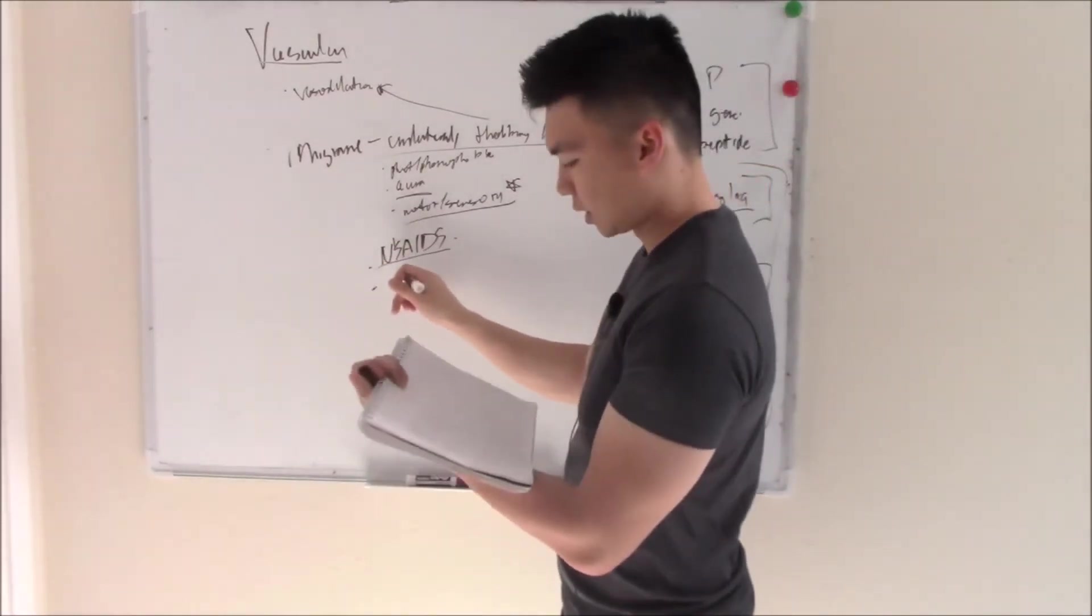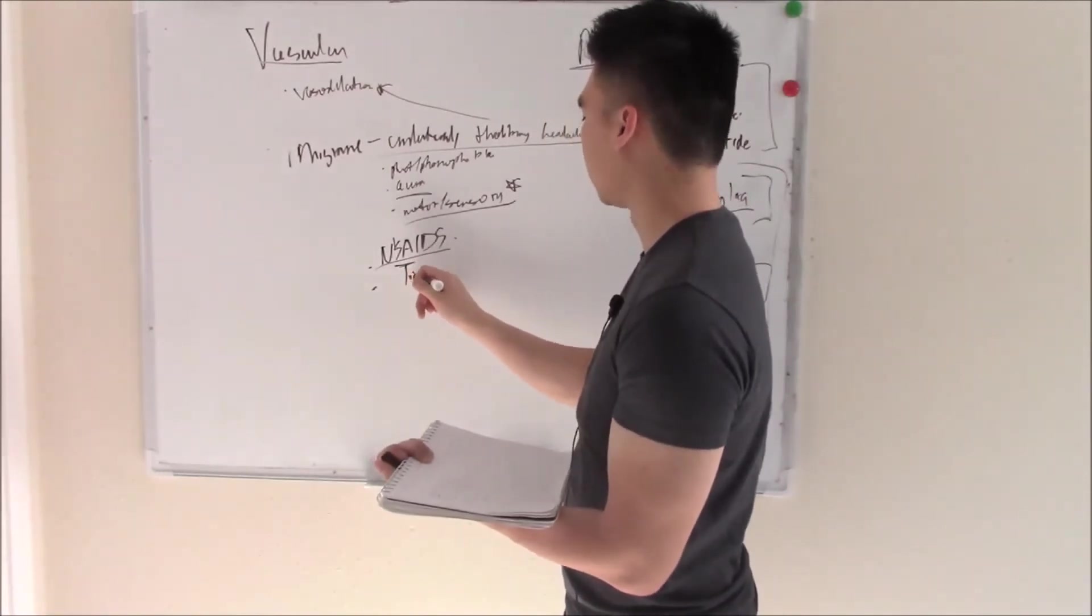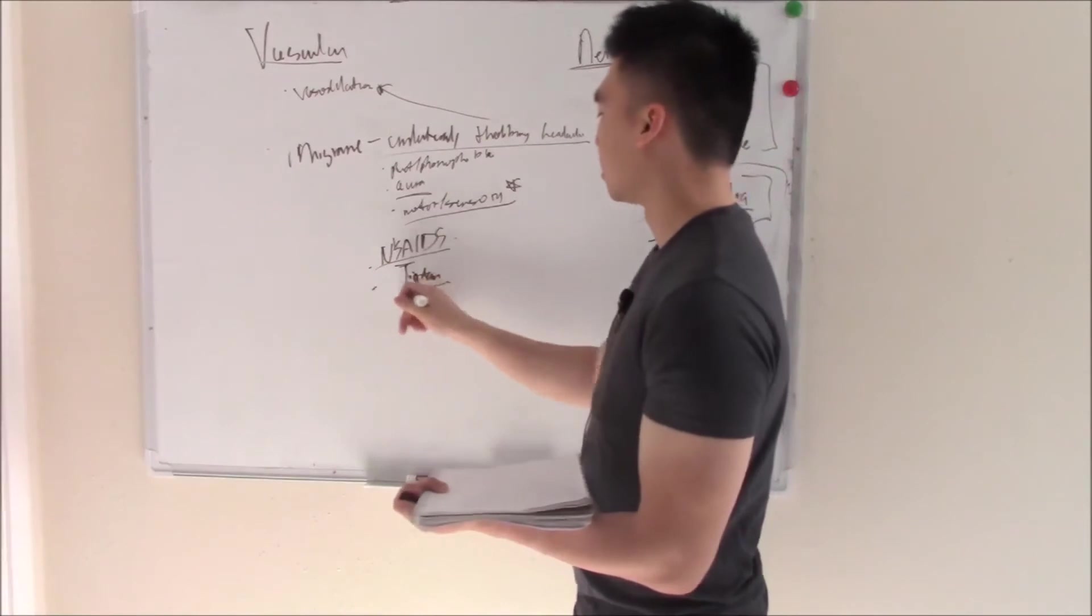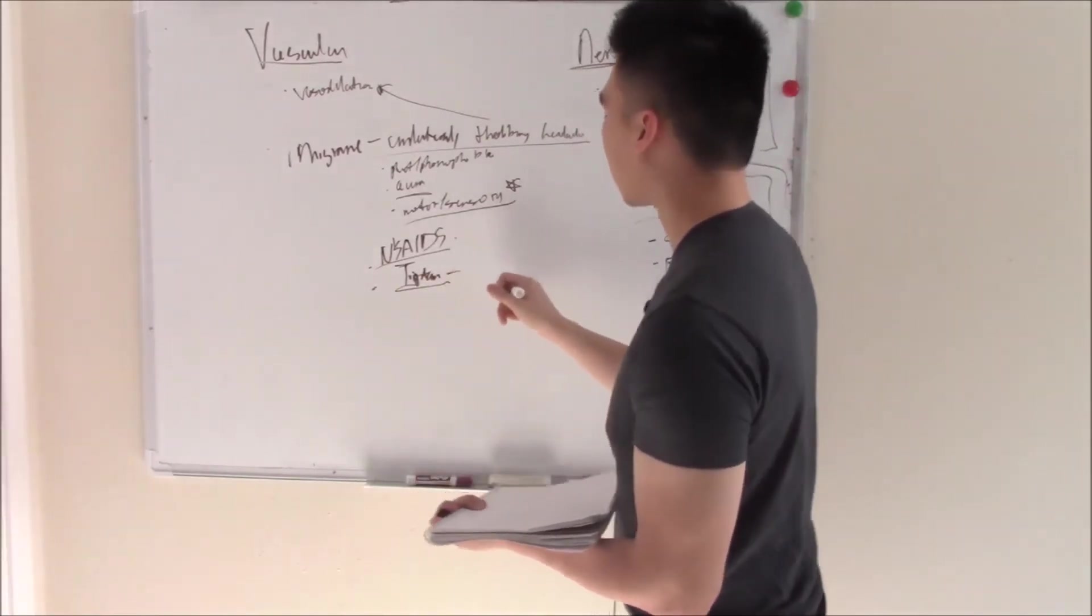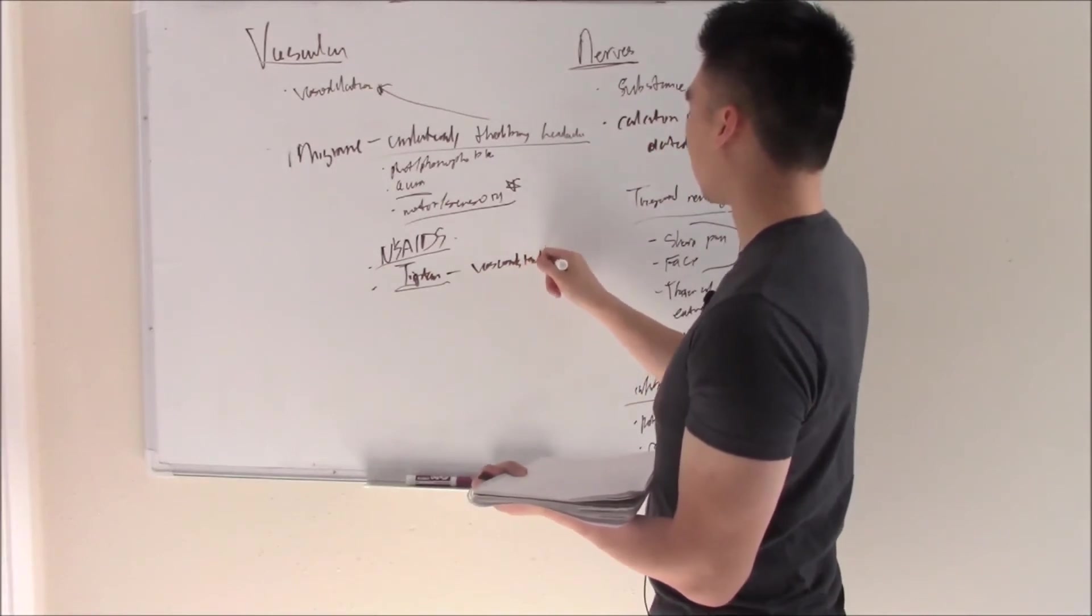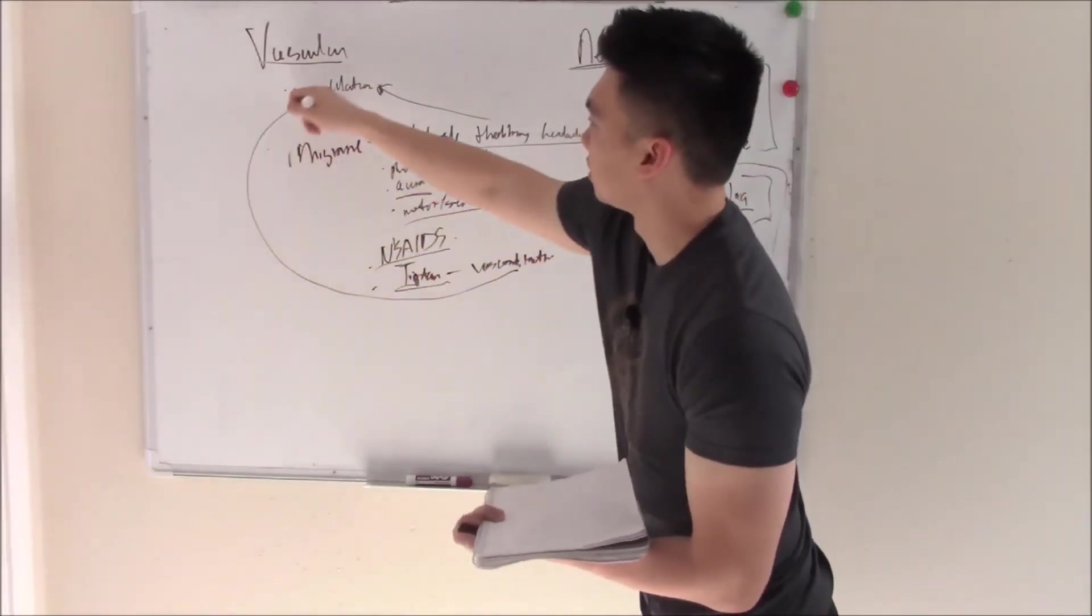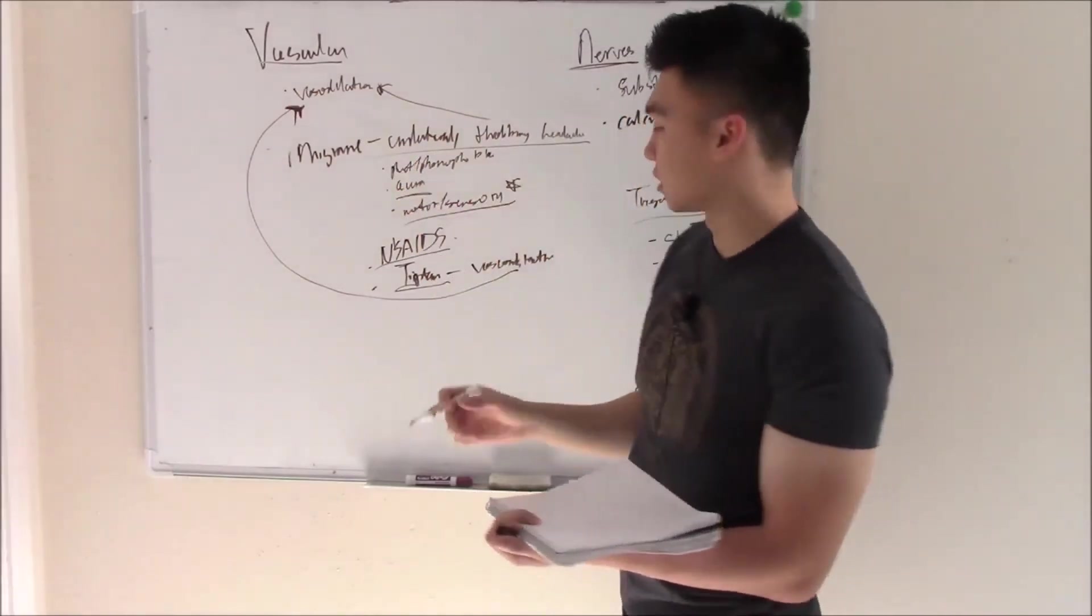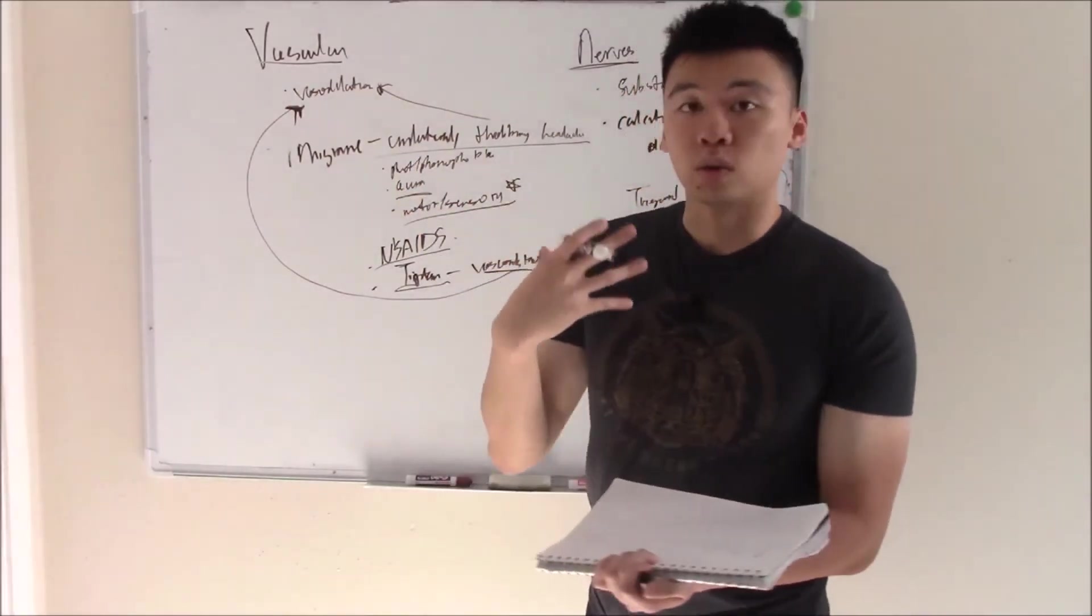But if things get more severe, then we can start moving to things like triptans. Triptans, like sumatriptan, everything has triptan in their name. So triptans are drugs that cause vasoconstriction. That's one of the mechanisms that we propose. Vasodilation was one of the mechanisms that we propose might cause headaches, so vasoconstriction might kind of reduce that.